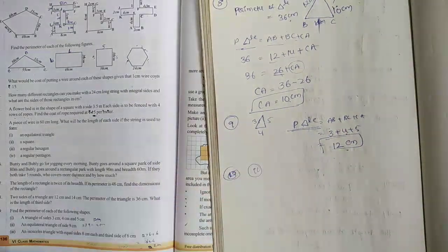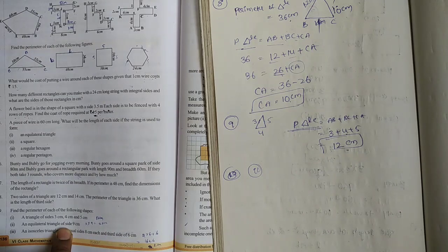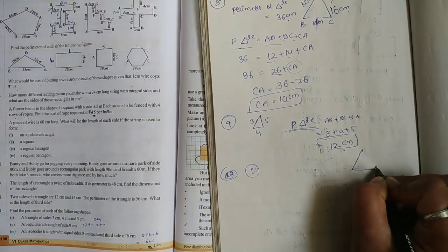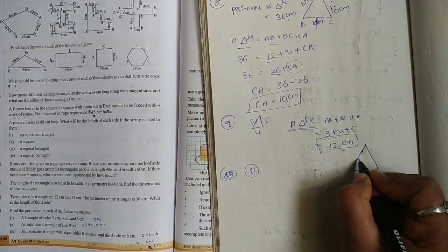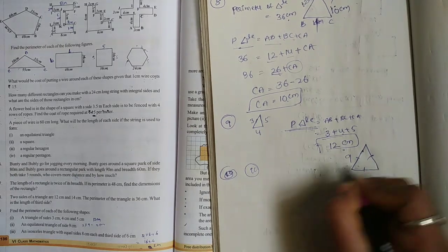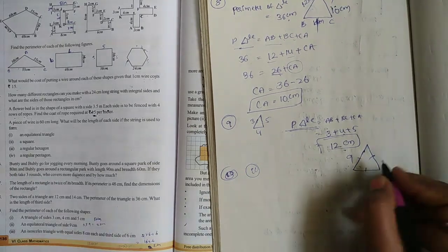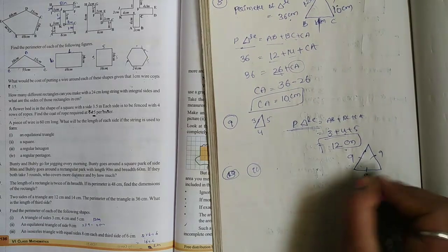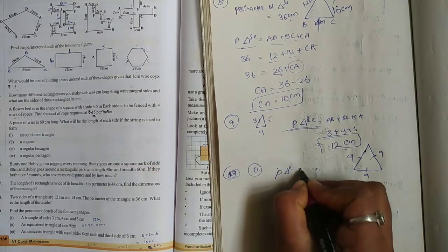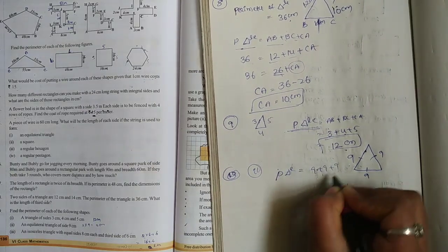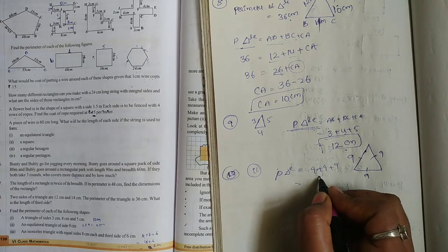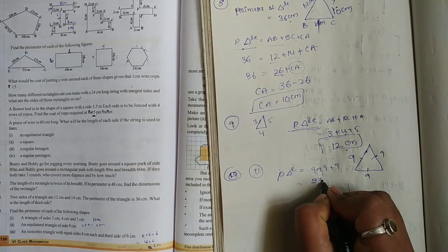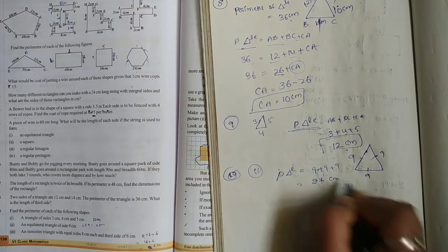Second one: an equilateral triangle of side 9 centimeters. All three sides are equal to 9 centimeters. Perimeter equals 9 plus 9 plus 9 equals 27 centimeters.